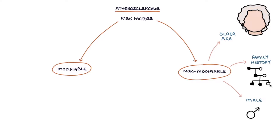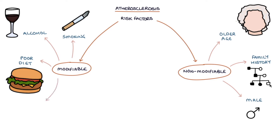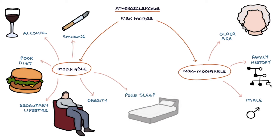The modifiable risk factors are smoking, alcohol consumption, a poor diet which is high in sugar and trans fat and low in fruit, vegetables, and omega-3s, a sedentary lifestyle with little exercise, obesity, poor sleep, and increased stress.